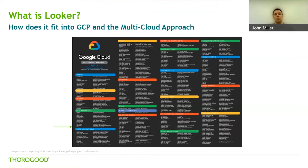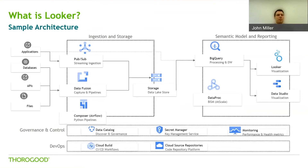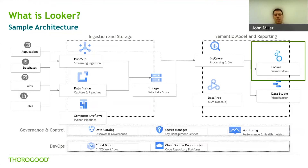Looker offers Looker Blocks, which are pre-built pieces of code that allow you to plug and play with your data to help with analytics and insights. Looking at a sample architecture: starting from the left, you would ingest and store your source data into storage, then use BigQuery to process data and act as your data warehouse. From there, you could use Data Studio for simple visualizations, but for more interactive, advanced, production-level dashboards, you'll want to use Looker on the right. This paints a high-level picture of where Looker fits in GCP architecture.